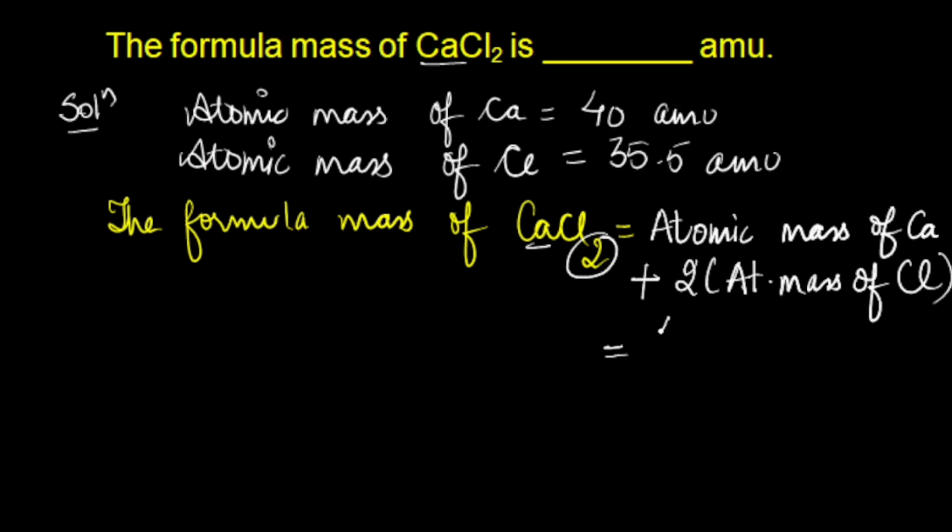Fill in the values. 40, which is the atomic mass of calcium, plus 2 times atomic mass of chlorine, 35.5. Solving these, 40 plus 71, which comes out to be 111 amu.